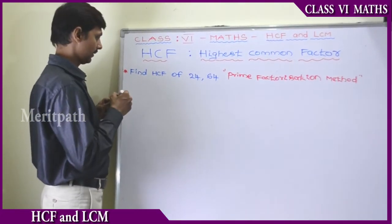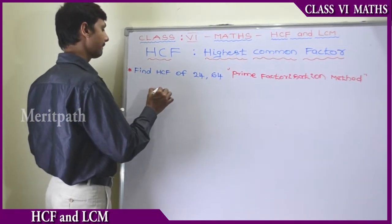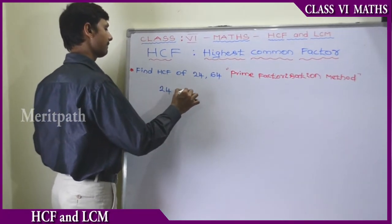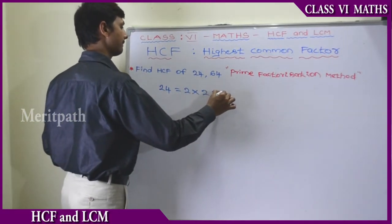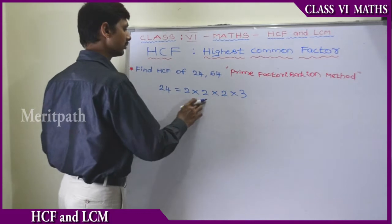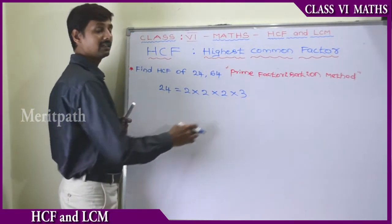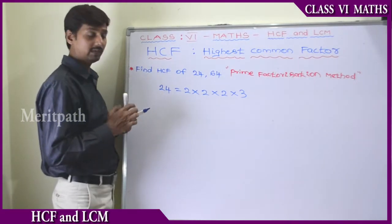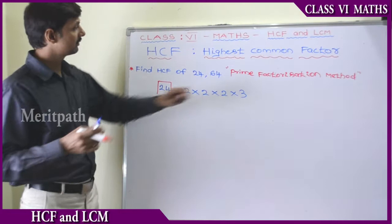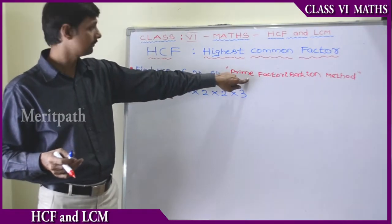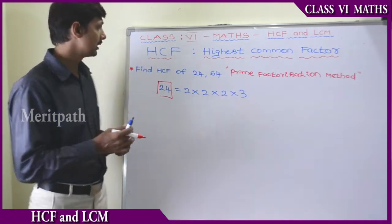24 can be expressed as 2 × 2 × 2 × 3, because using the prime factorization method, 24 is equal to 2 × 2 × 2 × 3. So 24 is expressed as a product of prime numbers.